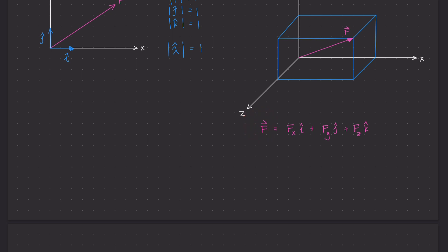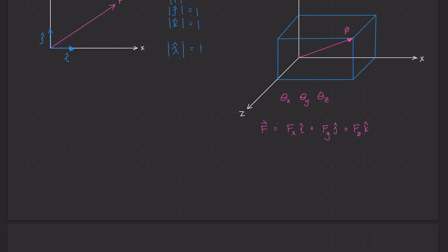When we introduce the direction angles for all three components — θx, θy, and θz — you know from previous videos that the x component equals F·cos(θx)·i, the y component equals F·cos(θy)·j, and the z component equals F·cos(θz)·k.